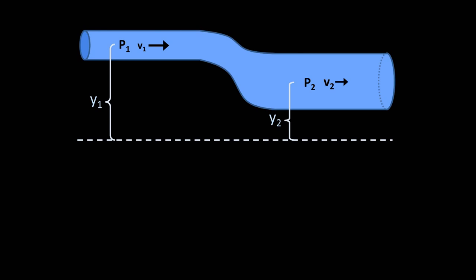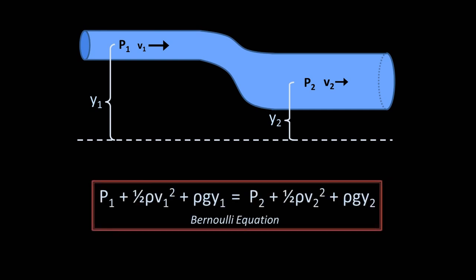In the interest of time, I'll spare you its derivation and just give the Bernoulli equation to you. The pressure at point one plus one-half the fluid density times the velocity at point one squared plus the density times little g times the height at point one must equal the sum of those same values at point two. Or another conceptually identical version states that this sum is a constant.